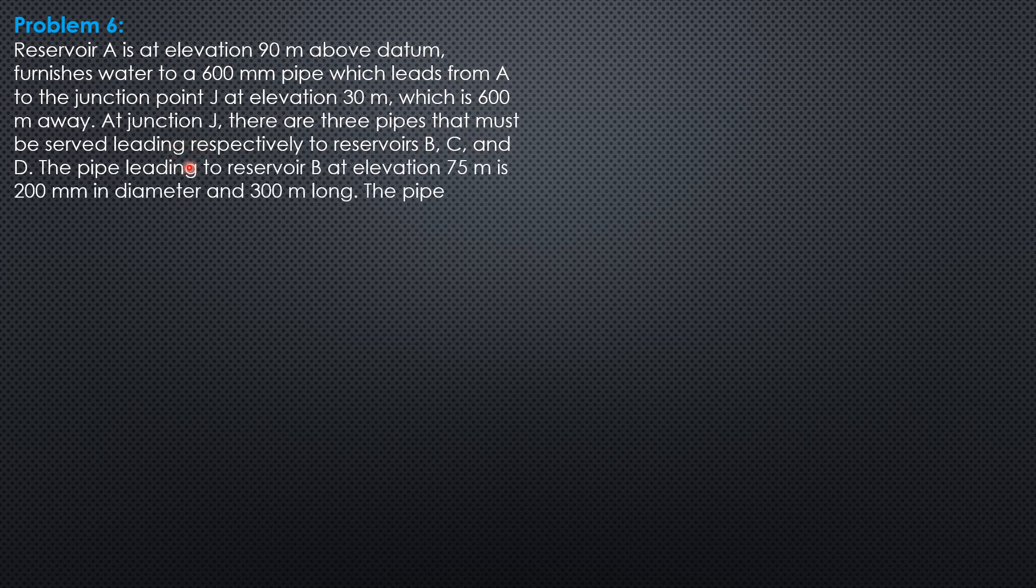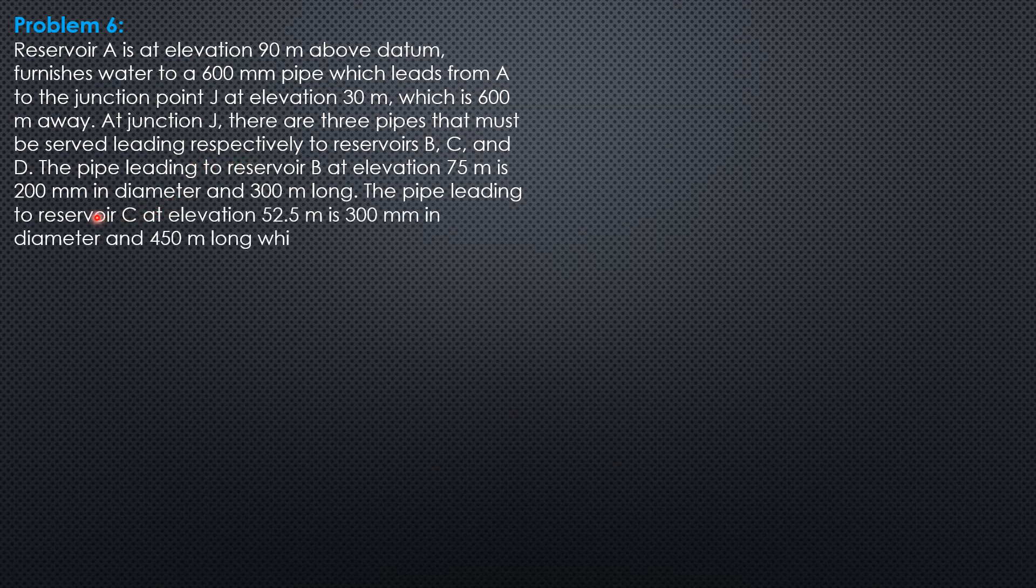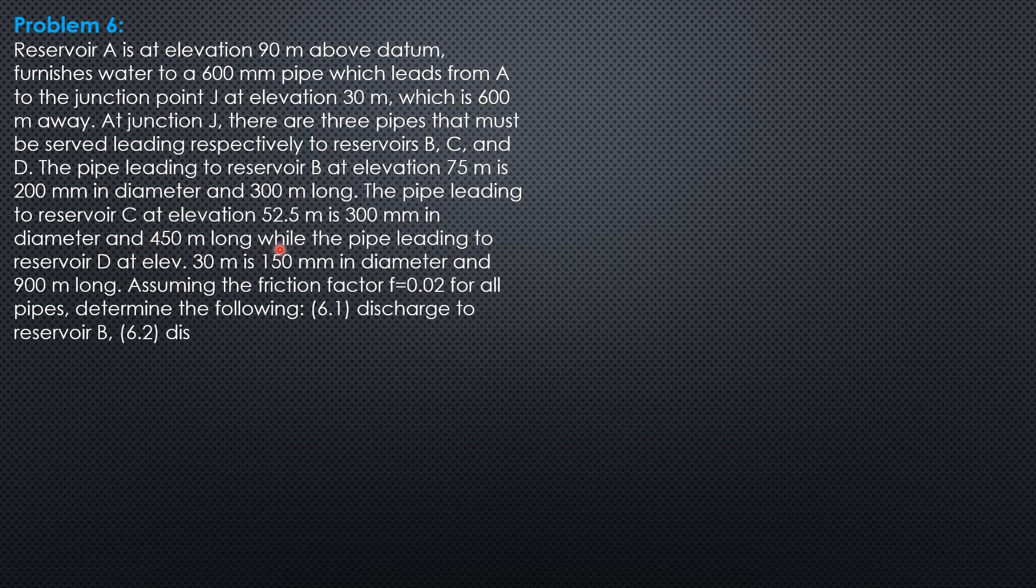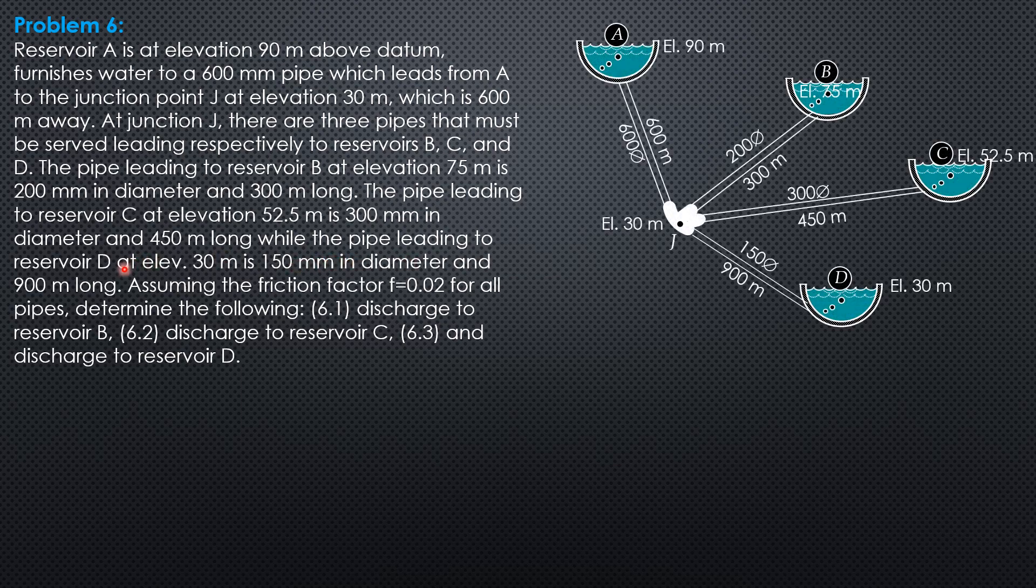Leading respectively to reservoirs B, C, and D. The pipe leading to reservoir B at elevation 75 meters is 200 mm in diameter and 300 meters long. The pipe leading to reservoir C at elevation 52.5 meters is 300 mm in diameter and 450 meters long, while the pipe leading to reservoir D at elevation 30 meters is 150 mm in diameter and 900 meters long.